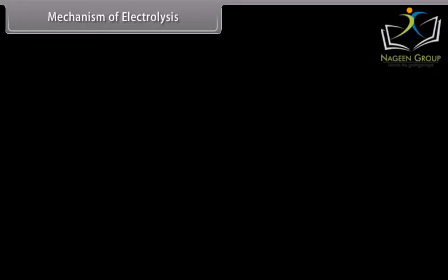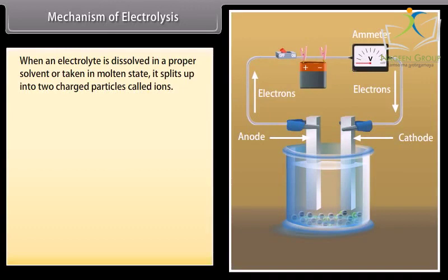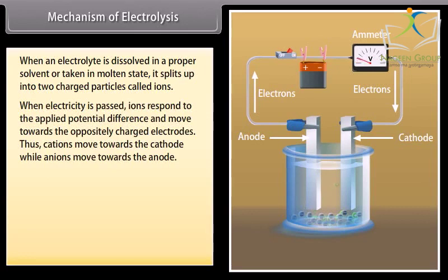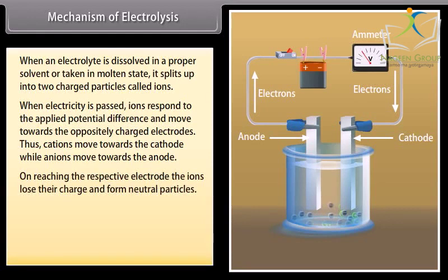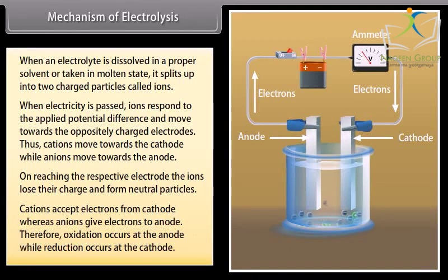Mechanism of electrolysis. When an electrolyte is dissolved in a proper solvent or taken in molten state, it splits up into two charged particles called ions. When electricity is passed, ions respond to the applied potential difference and move towards the oppositely charged electrodes. Thus, cations move towards the cathode while anions move towards the anode. On reaching the respective electrode, the ions lose their charge and form neutral particles. Cations accept electrons from cathode whereas anions give electrons to anode. Therefore, oxidation occurs at the anode while reduction occurs at cathode.